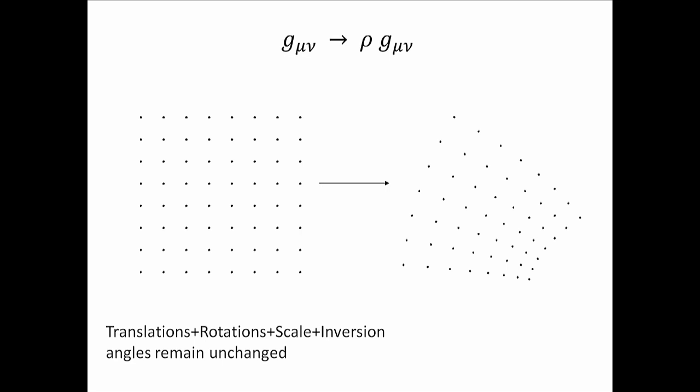The only thing which remains unchanged is the angles. All the lines which here form a right angle — when after transforming, they will also maintain that angle. To see this, what you need to do is perform transformations which keep the metric constant up to a scale. When you do that, you find that in larger than two dimensions you get a finite group — in fact, you get SO(D, 2). So for D bigger than two, these transformations give you SO(D, 2).